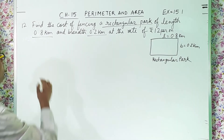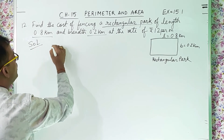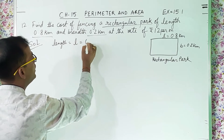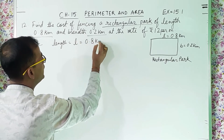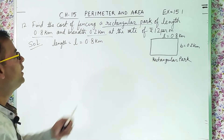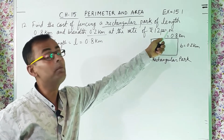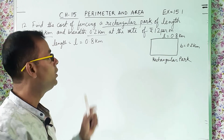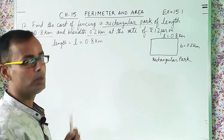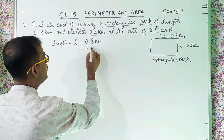So length L is 0.8 kilometers and breadth is 0.2 kilometers. Since the rate is given per meter, and they are telling rupees 12 per meter, we need to convert the measurements into meters.